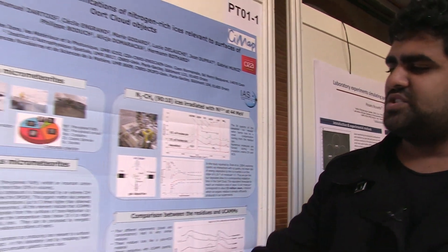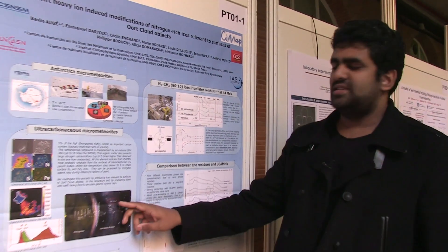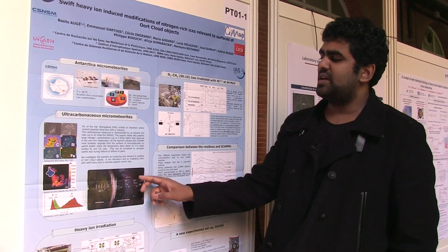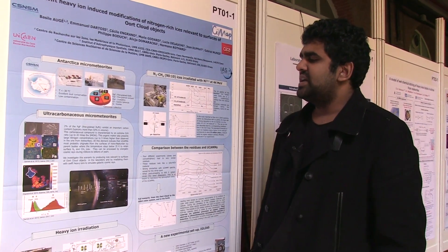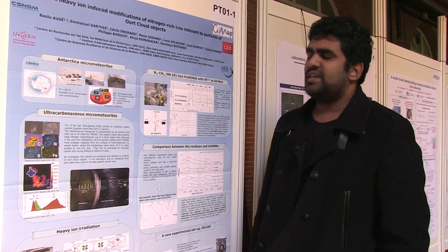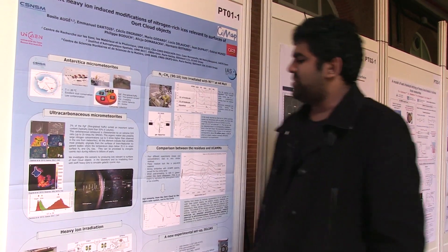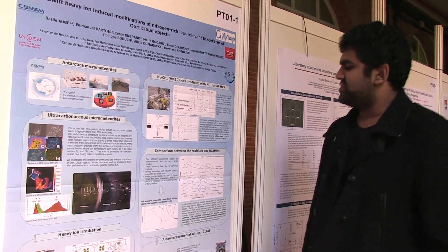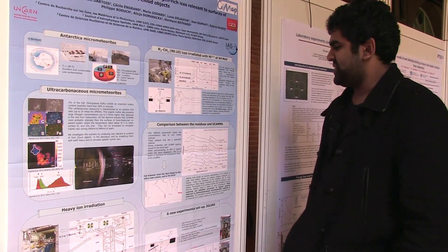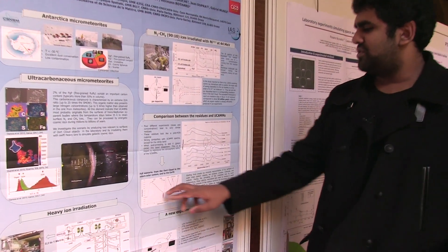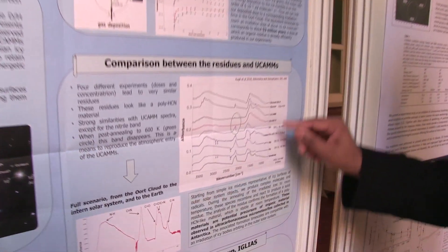This simulates the evolution of the object in the Oort Cloud, and then we have to simulate how this object is going to travel back toward Earth. For this we just warm up the ice very slowly — we warm it up to 300 K and then we collect a solid residue. You can see some assignment for the bands we have.